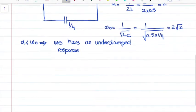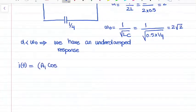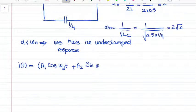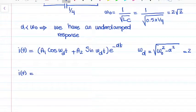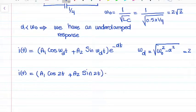We know that for an underdamped response the equation for I(t) is equal to (A1·cos(ω_d·t) + A2·sin(ω_d·t)) multiplied by e to the negative alpha·t. I need to find omega_d. Omega_d equals the square root of omega_0 squared minus alpha squared, which equals 2. Substituting, we get I(t) = (A1·cos(2t) + A2·sin(2t))·e^(−2t).